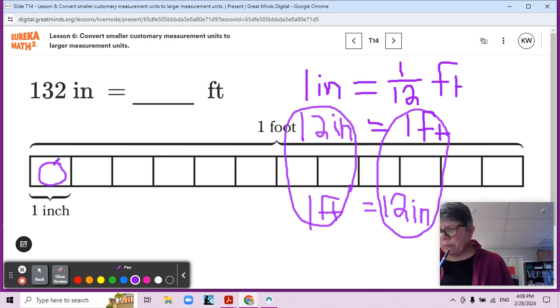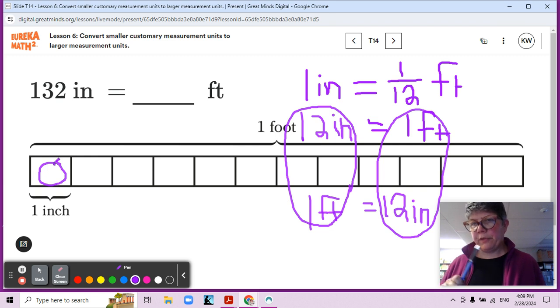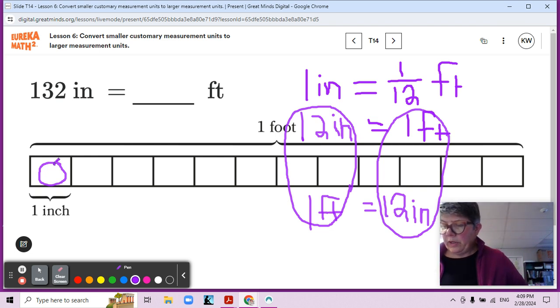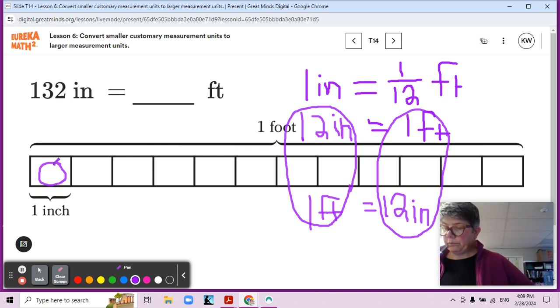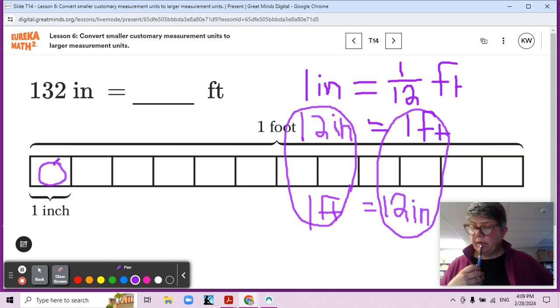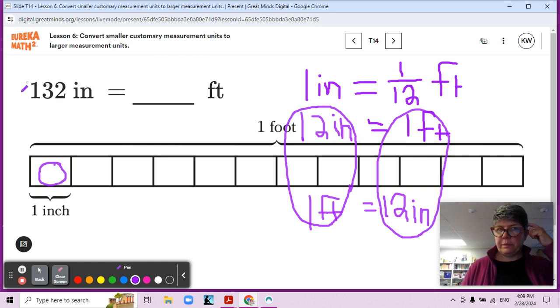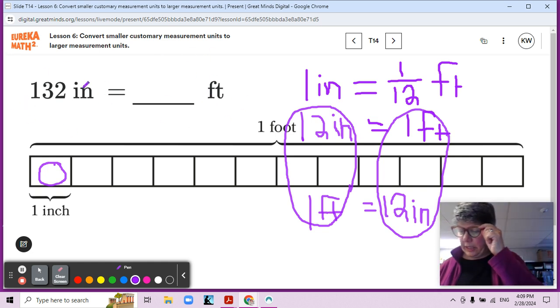In each equation, we can see that the number of feet is one 12th the number of inches. Yes. Okay. What is true about the number of feet equal to 132 inches? Coming back to our problem there on the screen. The number of feet is one 12th as much as the number of inches. So the number of feet is going to be one 12th as much as the number of inches.